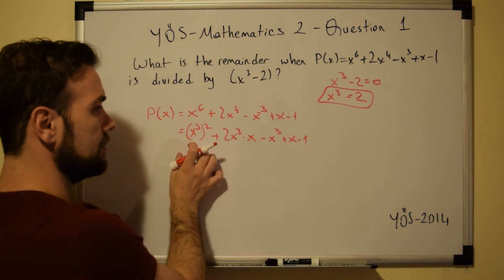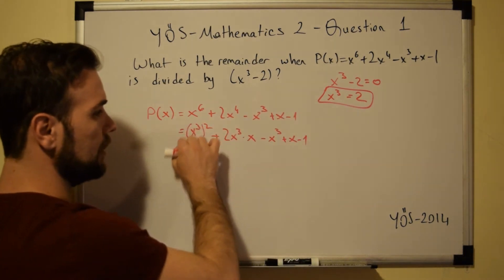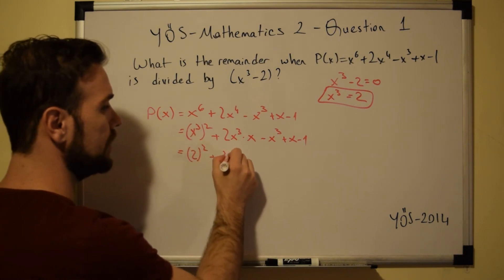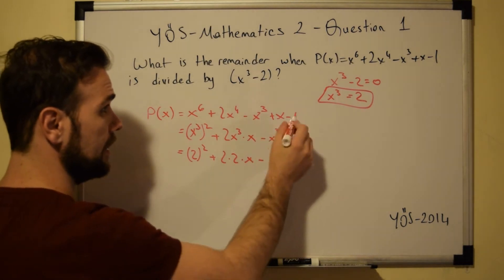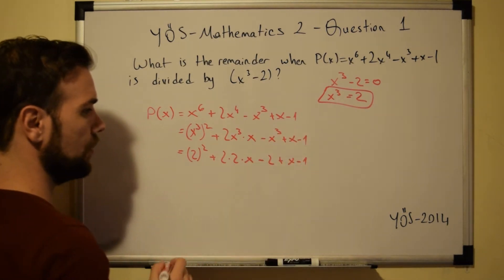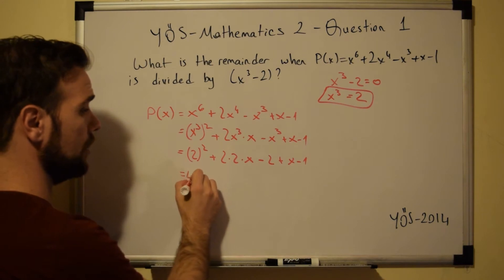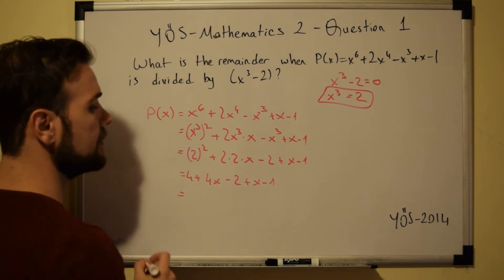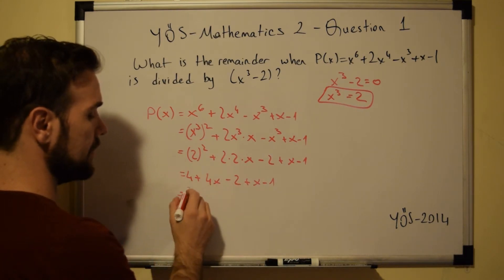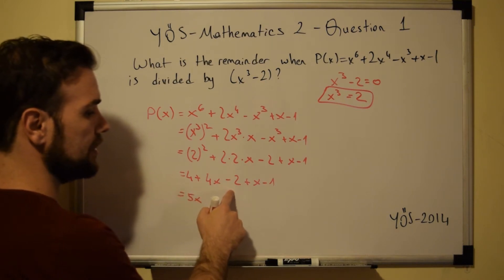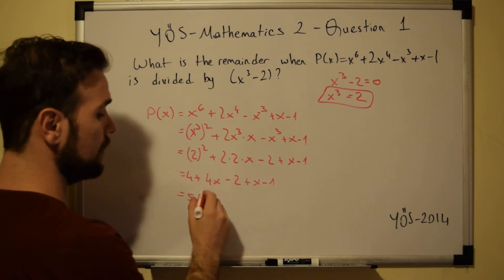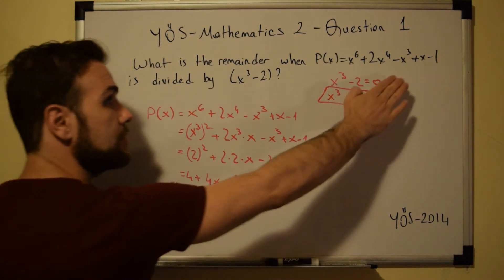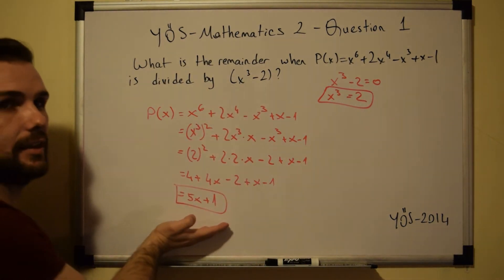Now we substitute the value of x to the power of 3 equals 2: we get 2 squared plus 2 times 2 times x minus 2 plus x minus 1. So we have 4 plus 4x minus 2 plus x minus 1, which equals 5x plus 1. So when this expression is divided by this expression, the remainder is 5x plus 1.